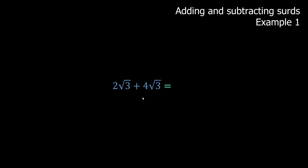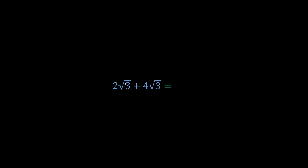Adding and subtracting surds. For two root three plus four root three — imagine that square root of three is x. So two x plus four x equals six x, and our x was square root of three, so the answer is six root three. After practice, you'll just recognize that you add the coefficients directly: two root threes plus four root threes equals six root threes.